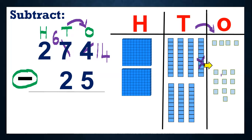Now we need to remove five from 14. Let's cut five blocks — one, two, three, four, five. So how many are remaining? One, two, three, four, five, six, seven, eight, nine. So nine ones are remaining. So I will write nine under ones.